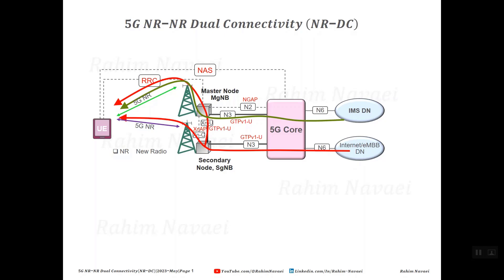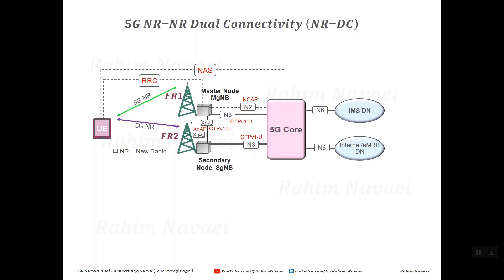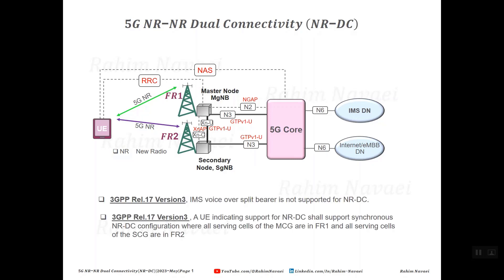In a typical NR dual connectivity configuration, the master node contains the serving NR cells as a master cell group working in FR1 (frequency range 1), and the secondary node contains the serving NR cells as a secondary cell group working in FR2 (millimeter wave). 3GPP specified master cell group as FR1 and secondary cell group as FR2 in Release 17 version 3.